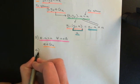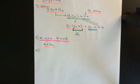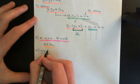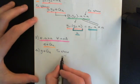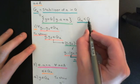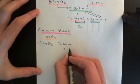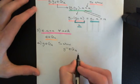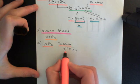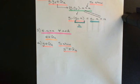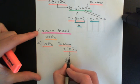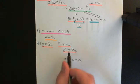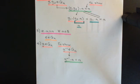Now axiom number four. We need to check that if little g is in the stabilizer of a in G, then its inverse g-inverse is also an element of the stabilizer of a in G. We know the inverse is in the group capital G, but we need to show it's in the stabilizer. This means we need to show that g-inverse dot a equals a. We know that g is in the stabilizer, so g dot a equals a — and reading this the other way, little a equals g dot a.